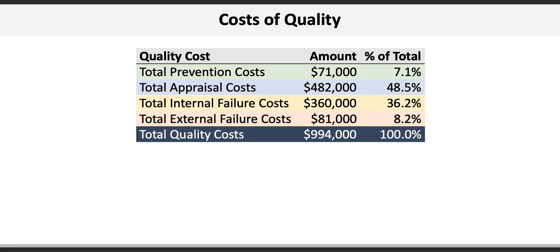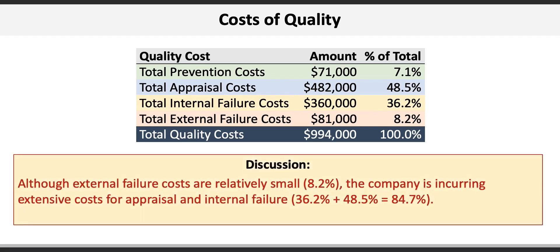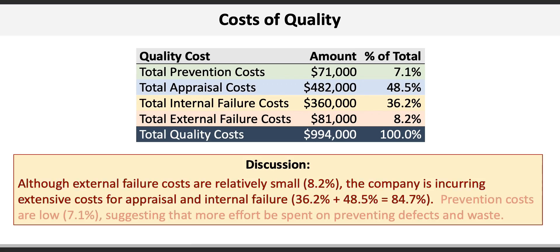Although external failure costs are relatively small at 8.2 percent, the company is still incurring extensive costs for appraisal and internal failure — 36 plus about 48.5 percent is almost 85 percent. Prevention costs are low at 7.1 percent, suggesting that more effort could be spent on preventing defects and waste. It's great that external failure costs are relatively low, meaning customers might not be seeing a lot of defective work, but that's because unacceptable output is being caught before it leaves the facility thanks to what appears to be rigorous inspection or appraisal.